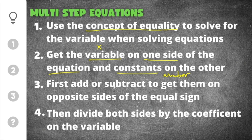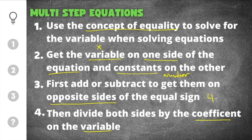The first thing you're going to want to do is add or subtract to get variables on one side of the equal sign and constants on the other side. Then you divide by the coefficient on the variable — the coefficient is just the number attached to the variable. For example, in 4x the coefficient would be 4, so you're going to divide by that.